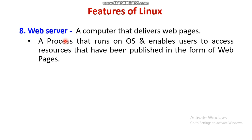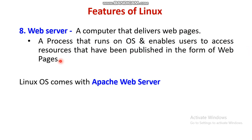The eighth feature is the web server. A web server is a computer program that delivers web pages over the internet — a process that runs on an operating system and enables users to access resources published in the form of web pages. By default, the Linux operating system comes with the Apache web server.